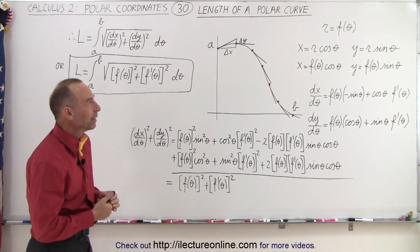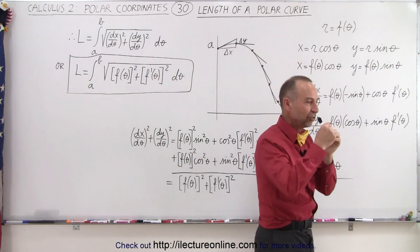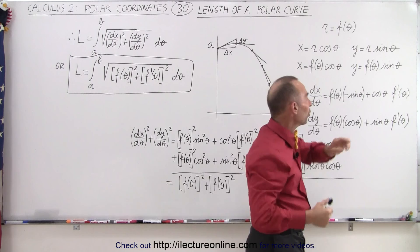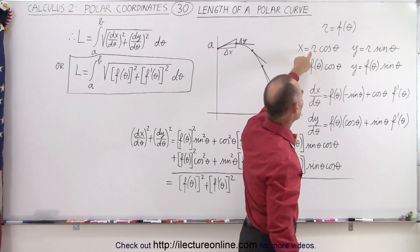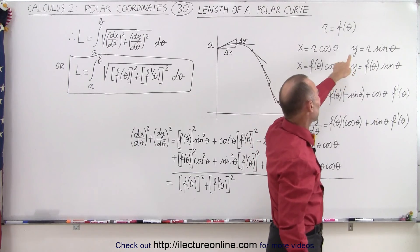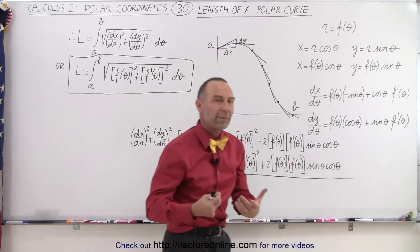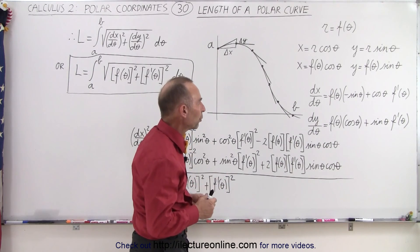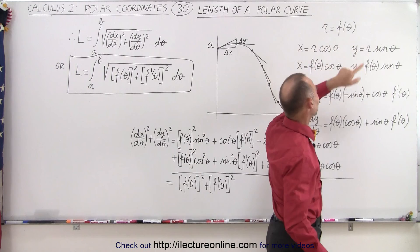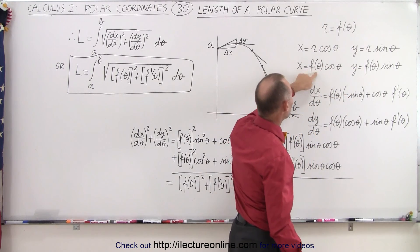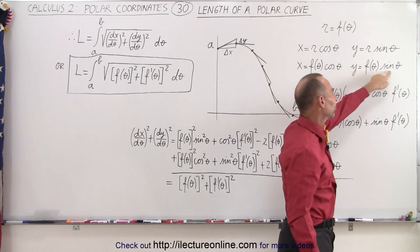What we have here is the relationship where the position away from the origin, R, is going to be a function of theta, such that x equals r times the cosine of theta and y equals r times the sine of theta — the general equations describing the polar form. And if we realize that r is simply a function of theta, we can say x is f(θ)·cos(θ) and y is f(θ)·sin(θ).